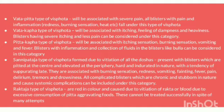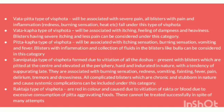In Vata-Kapha type of Vispota, it is associated with pain as well as itching, feeling of dampness, and heaviness, with severe itching and less pain. Pitta-Kapha type is associated with itching sensation, burning sensation, vomiting, fever, and blisters with inflammation and collection of fluid — bullae are considered in this category. Sannipata type of Vispota, formed due to the combination of all three doshas, has all the symptoms of vata, pitta, and kaphaja Vispota.